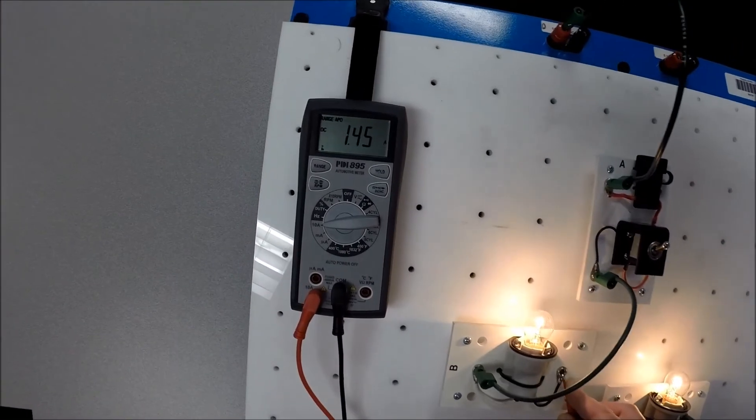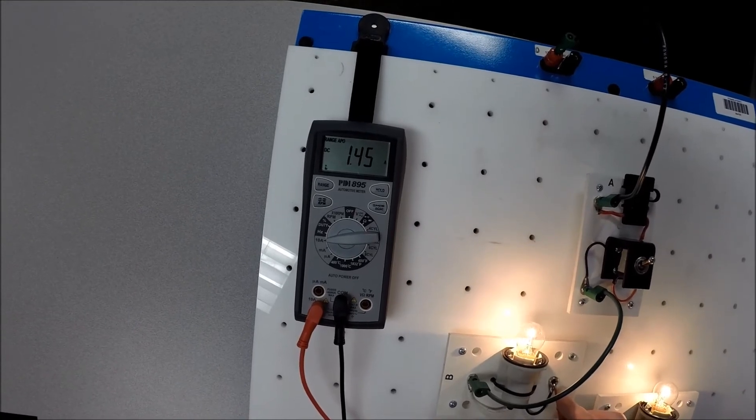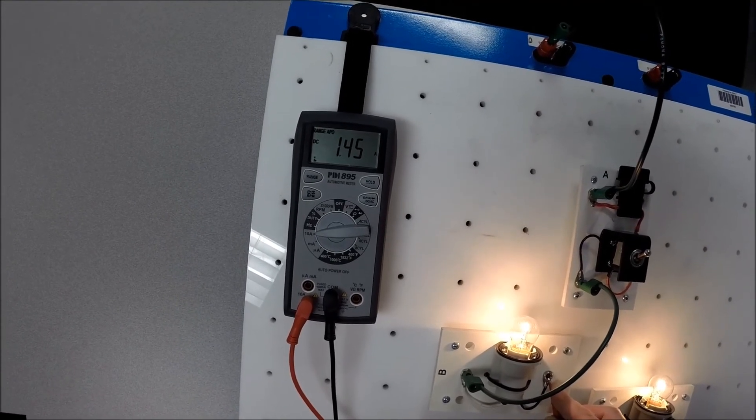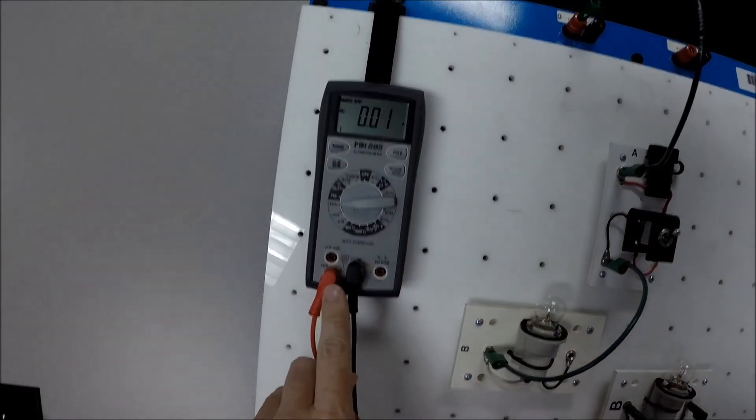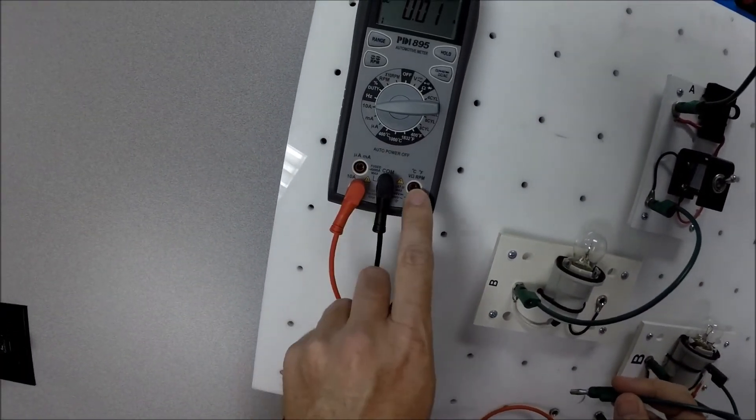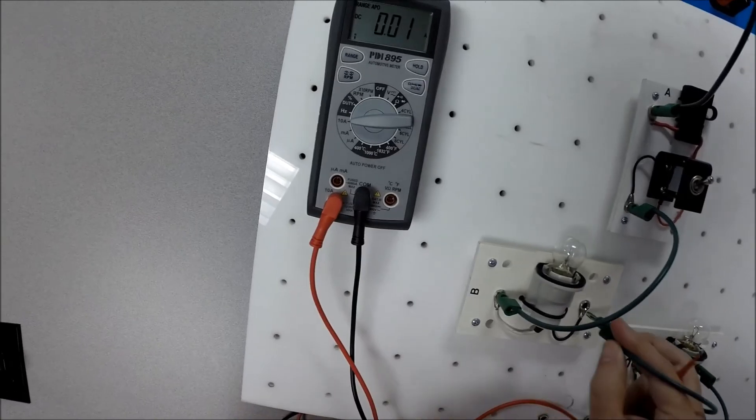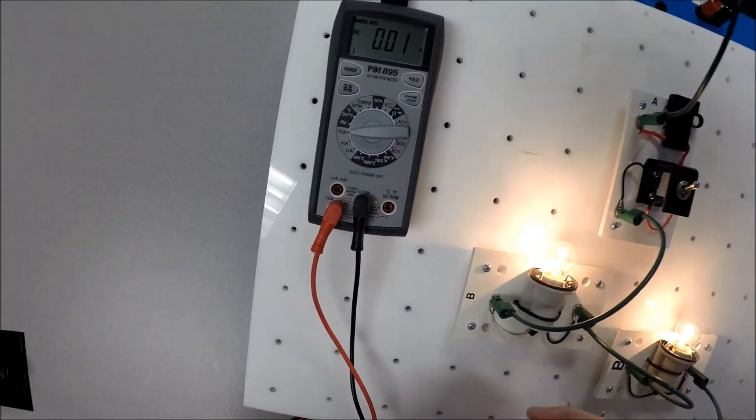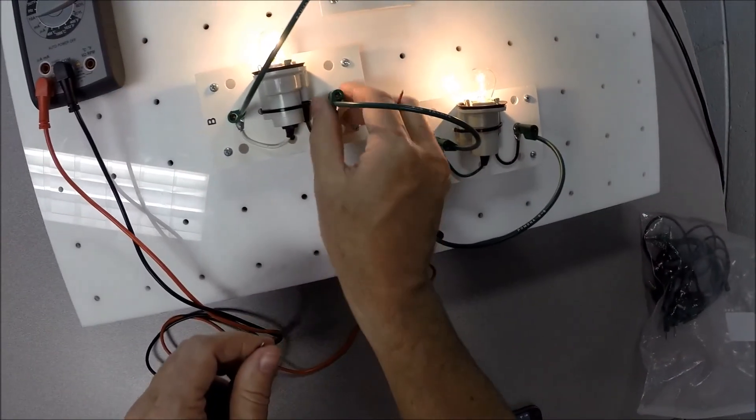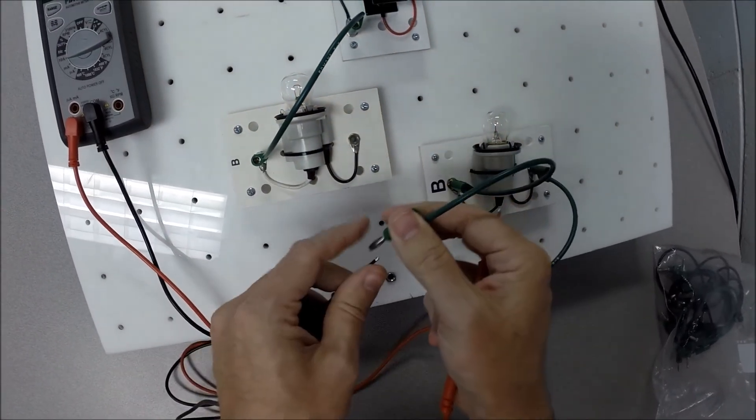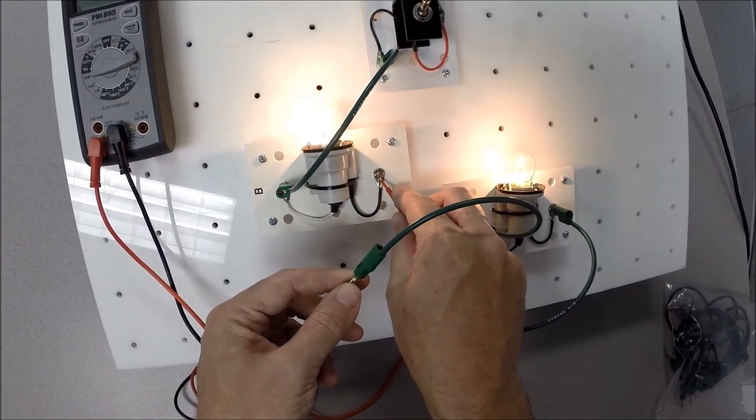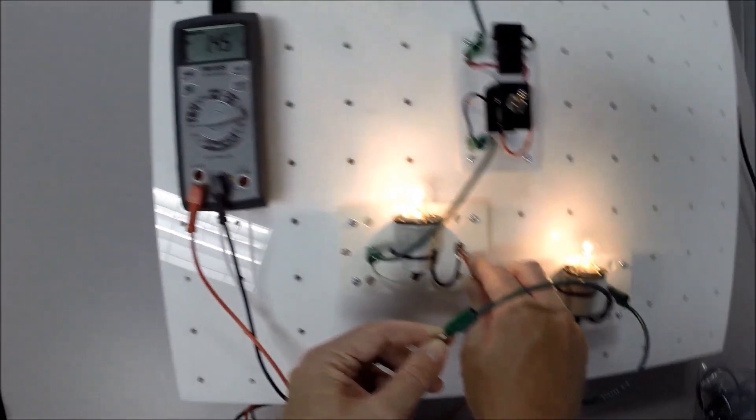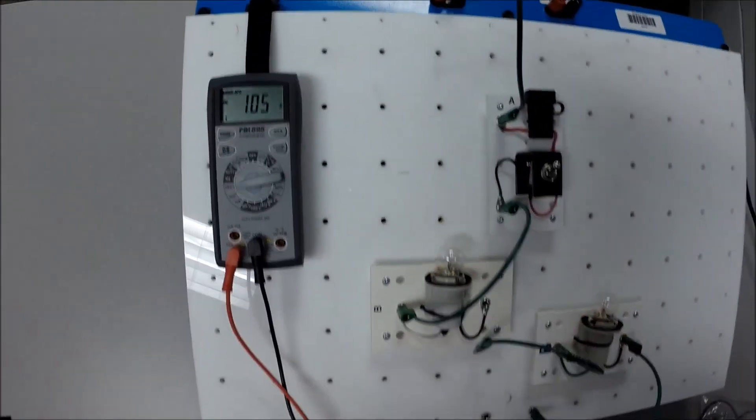So when you're measuring current, remember to select the proper amperage scale on your meter. Remember to move your leads. Make sure that you're not plugged in here. You want to be plugged in there. And then make sure that you actually physically disconnect the circuit and put the meter in series with the circuit in order to get your reading. And that's how we'll measure current.